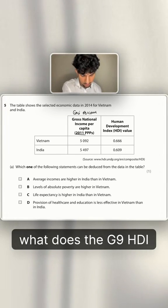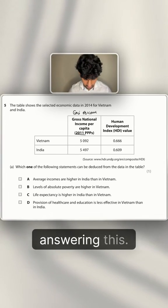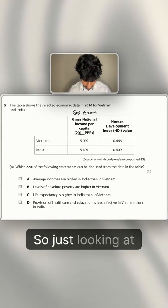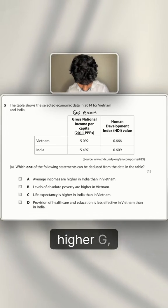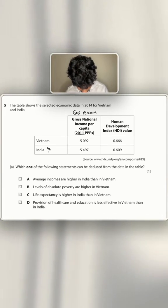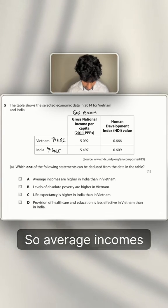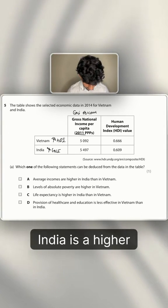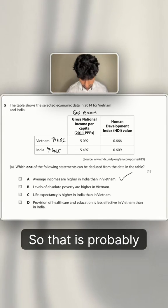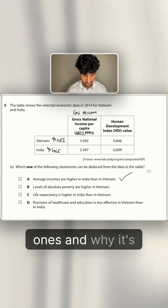What is the GNI and HDI of Vietnam and India telling us? Let's have a shot answering this. Just looking at it, India has a higher GNI, Vietnam has a higher HDI. Average incomes are higher in India than Vietnam. India has a higher GNI, so I would say that follows. That's probably the answer, but let's have a read of the other ones and why it's not them.